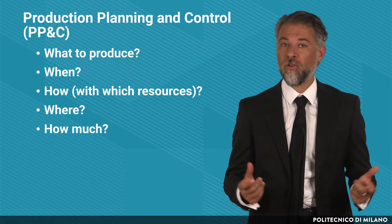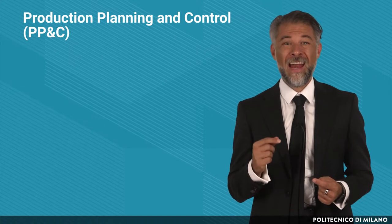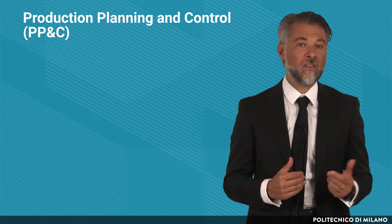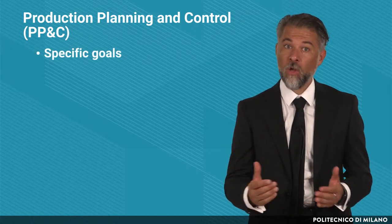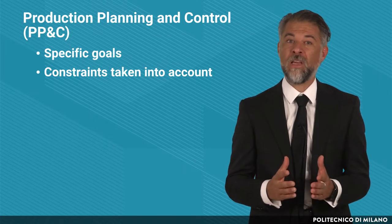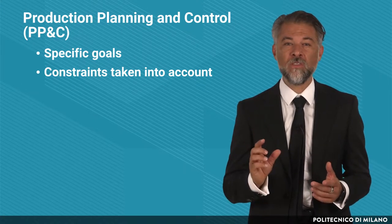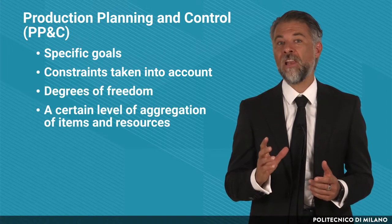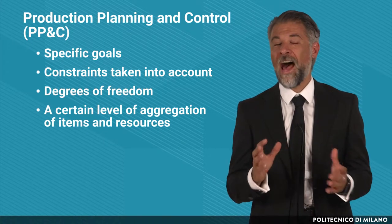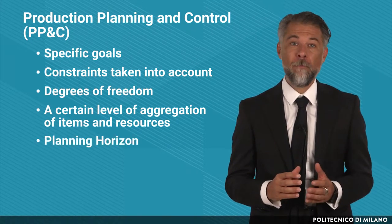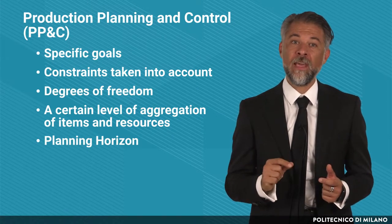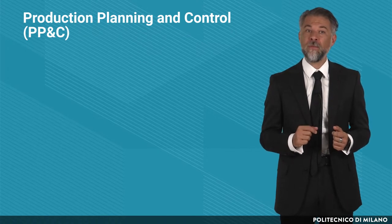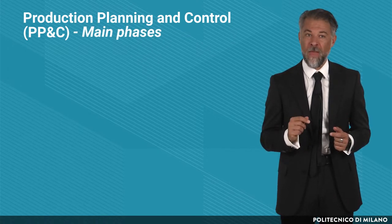The planning and control process is complex. It encompasses a number of steps or stages, each of which is characterized by specific goals, constraints taken into account — typically arising from decisions made at the previous steps — degrees of freedom, a certain level of aggregation of items and resources, a planning horizon, in turn split into planning periods. In particular, the PPC process encompasses the following main phases.